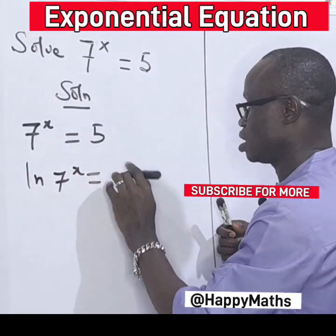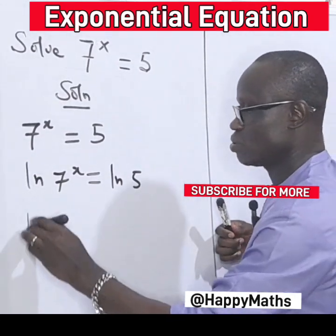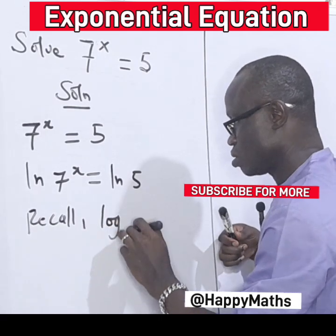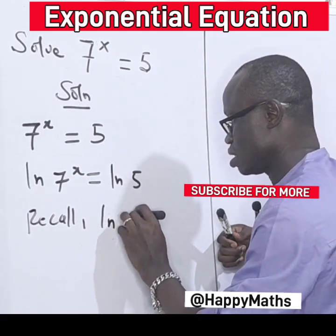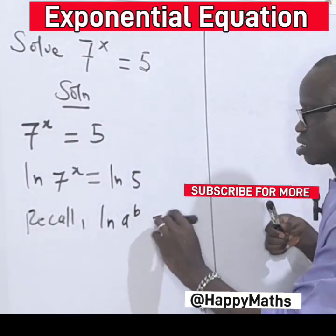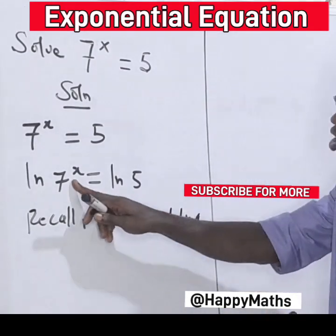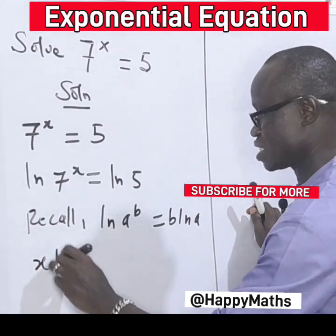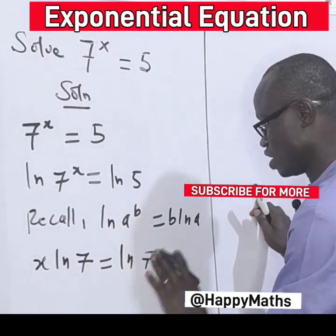Take ln of 5. Recall that ln of b raised to a is the same thing as b times ln a. Now let's move our s to the front. So this will give us s ln 7 equal to ln 5.